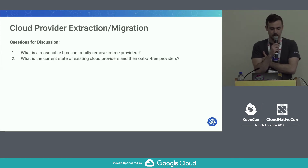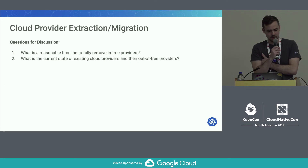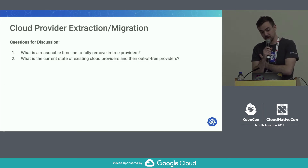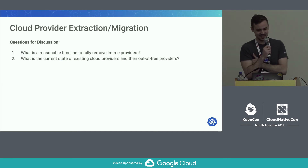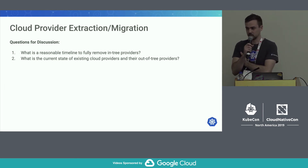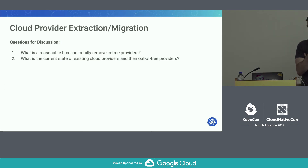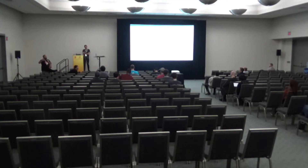So maybe a little bit of an opportunity for some discussion here. What is a reasonable timeline to fully remove in-tree providers? That's the first question. And also, what is the state of existing cloud providers and their out-of-tree providers? If anybody wants to share or has any thoughts on that. And how many of you are currently using out-of-tree providers?